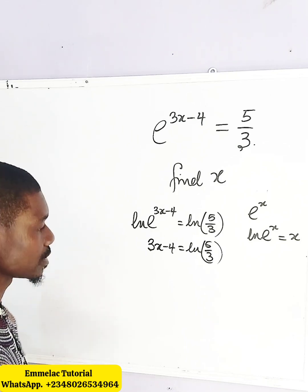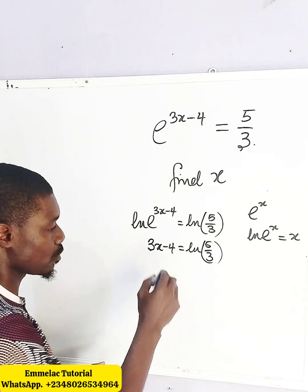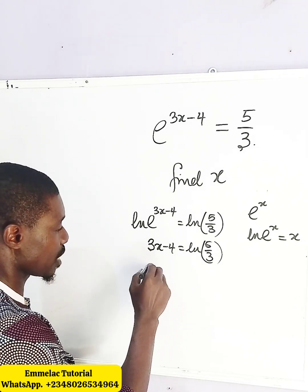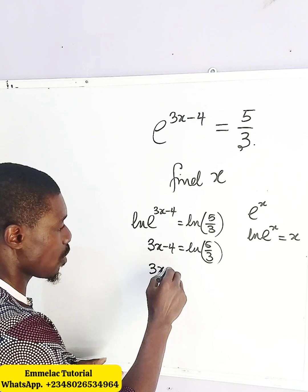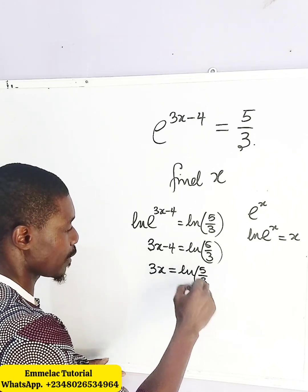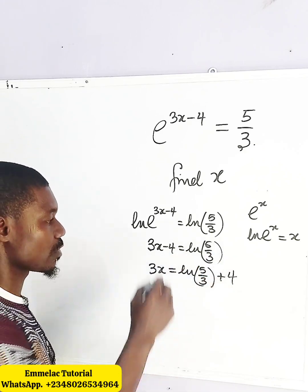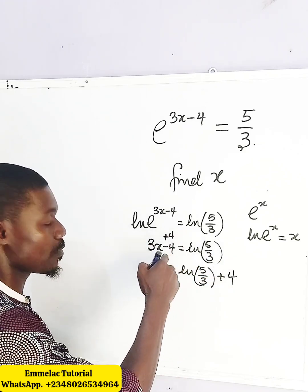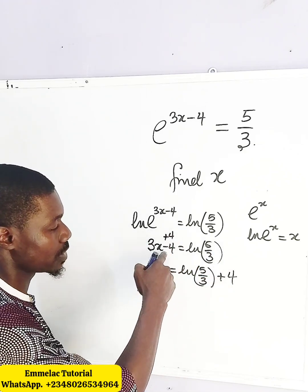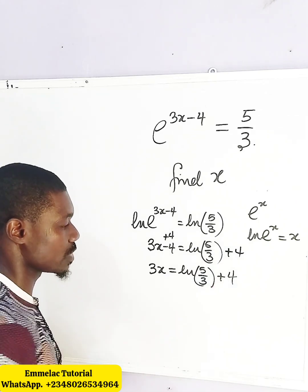Alright, so at this point, we can just add 4 to both sides. By adding 4 to both sides, we are now left with 3x equals ln of 5 over 3 plus 4. When we add 4 here, negative 4 plus 4 will give us 0, and we add 4 to the other side, so we are left with this.